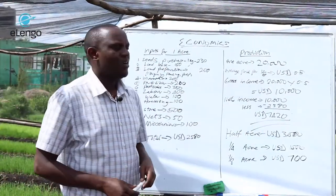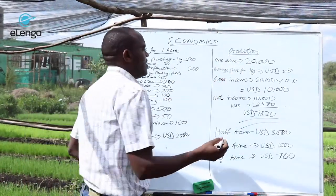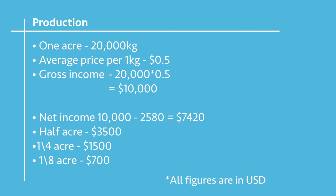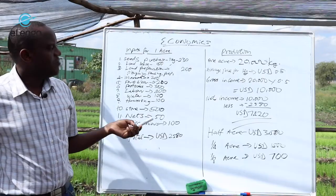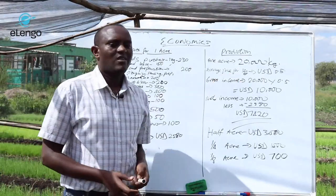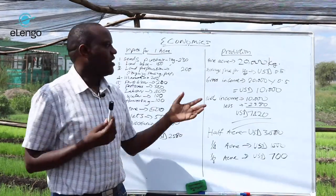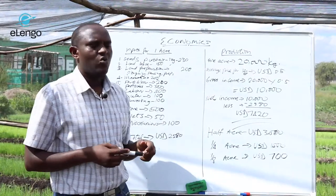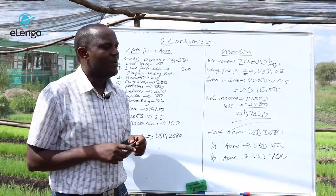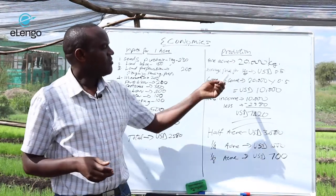In terms of production, we have put the production at 20,000 kgs for one acre when you use one kg of seed. But with good soils and excellent management, we have seen farmers going up to 25,000 or even 30,000 kgs. We have also seen some farmers doing only 10,000 kgs. It is important to note that once you put good management in, you are going to get good production. A key thing is when establishing the nursery, ensure you minimize seed loss so that you can get good production.